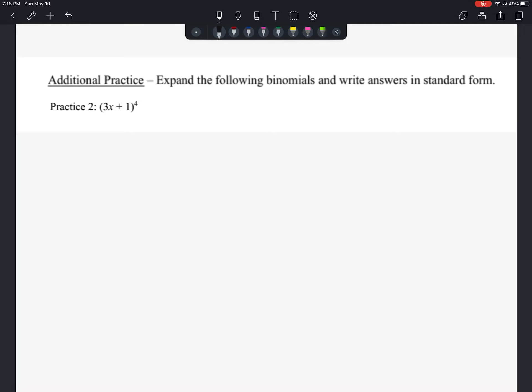This is the additional practice problem number two for anyone who's just looking for extra practice and wanting to check to see if they're correct. The problem is asking us to expand the binomial again. This time it's the quantity of 3x plus 1 to the fourth power.